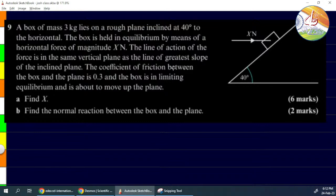The coefficient of friction is given here. Coefficient of friction is 0.3. The box is in limiting equilibrium, which means friction force is equal to mu times R. We have to find the value of X, so let's start.